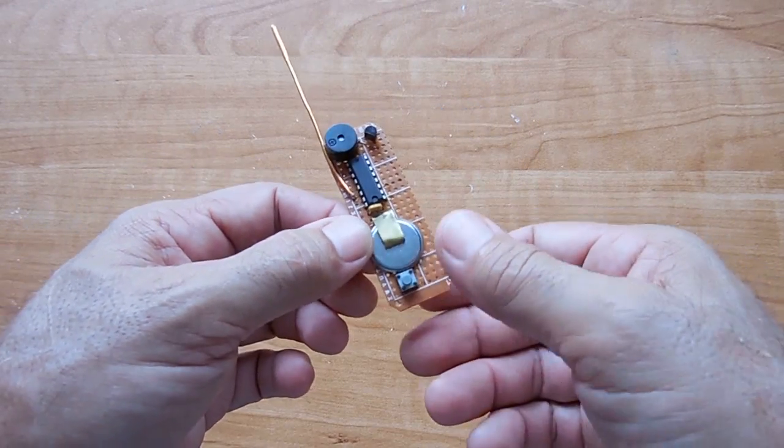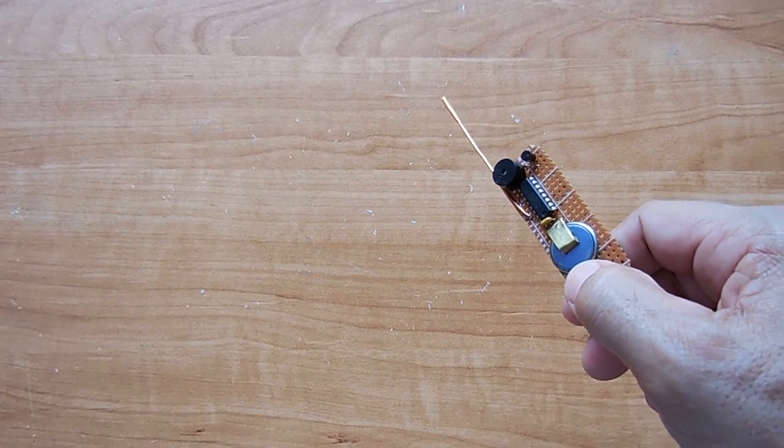To start it, you just simply point it where you want to check the AC voltage, and then you push the button.